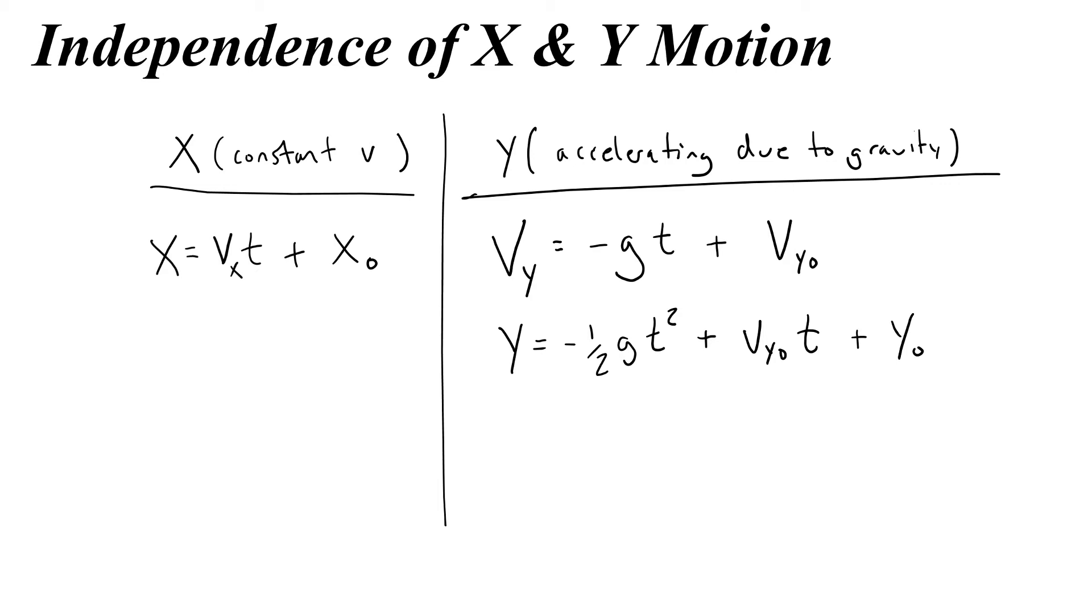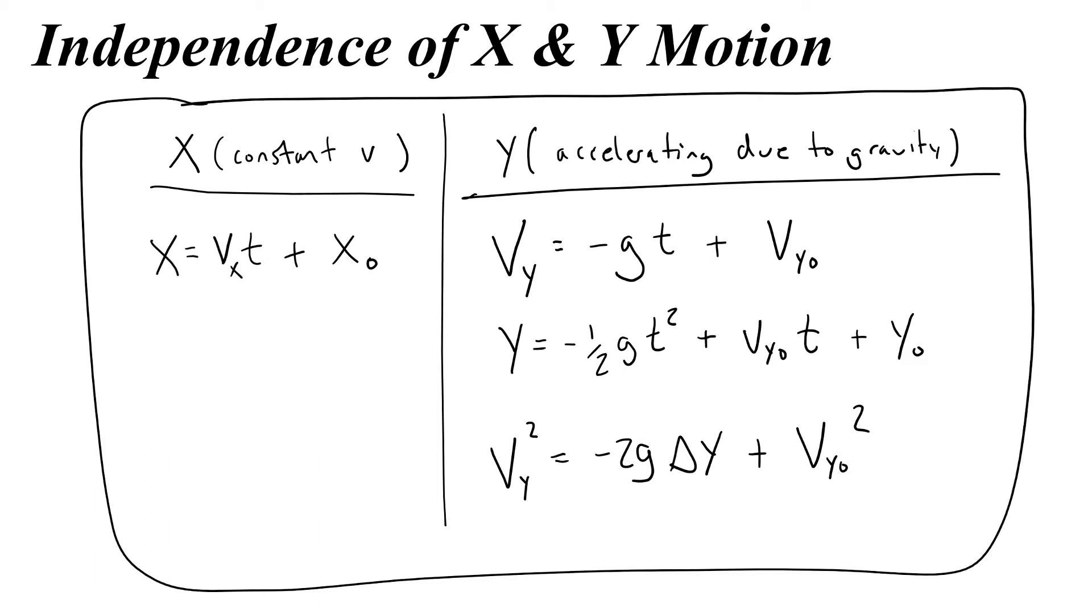And our ain't got no time equation would now be for the y velocity. So vy squared equals negative 2g delta y plus vy0 squared. So somewhere you should write down these equations. For the y or the up and down motion, we can use these three equations. And for the x motion, there is only this one equation needed.